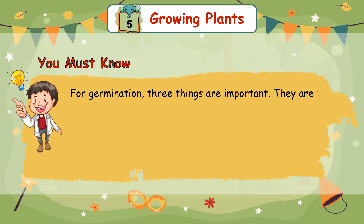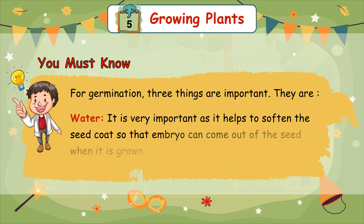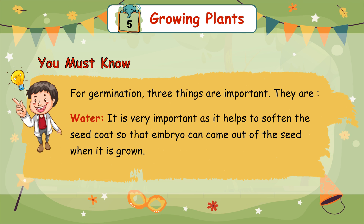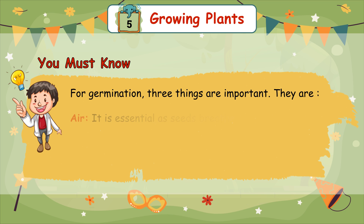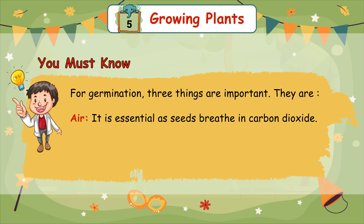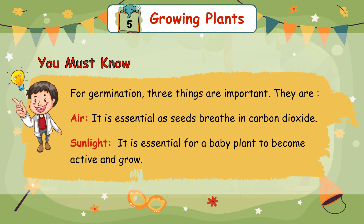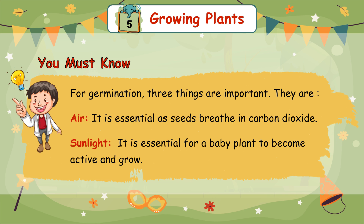For germination, three things are important. Water — it is very important as it helps to soften the seed coat so that the embryo can come out of the seed when it has grown. Air — it is essential as seeds breathe in oxygen. Sunlight — it is essential for a baby plant to become active and grow.